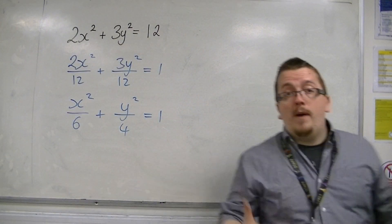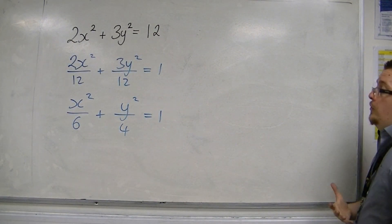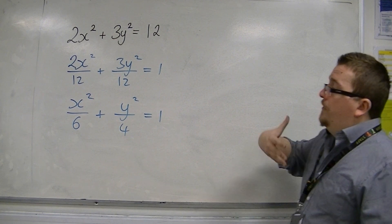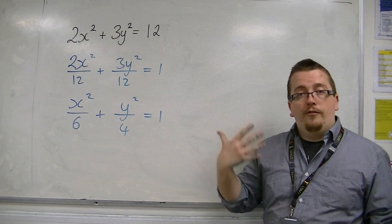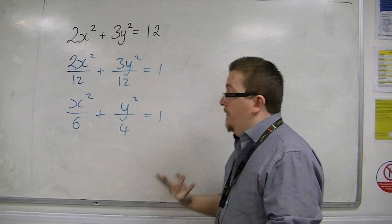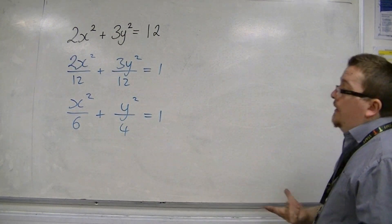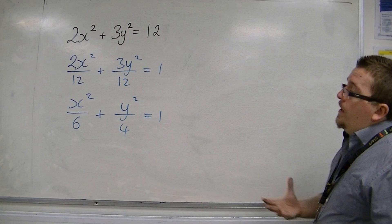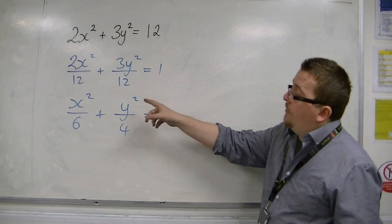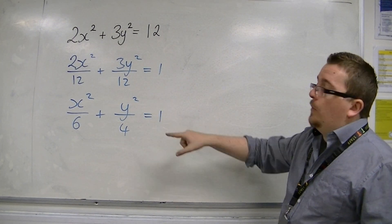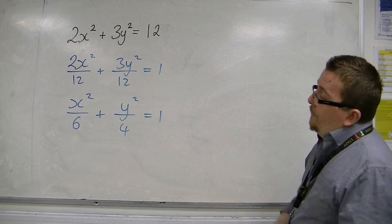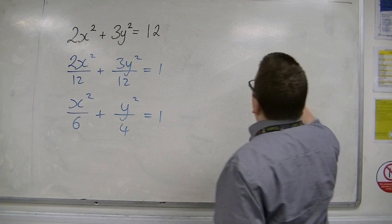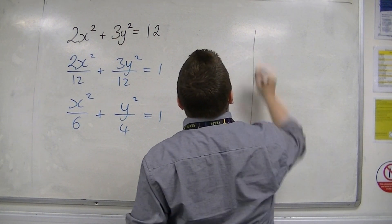Now if I remember back to the general format of an ellipse, it was x squared over a squared plus y squared over b squared is equal to 1. It's now in a format that's quite straightforward to sketch.